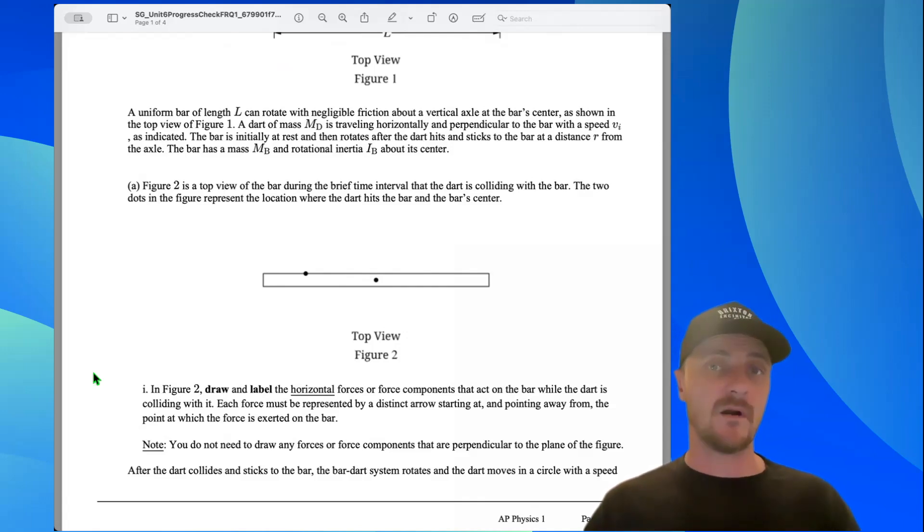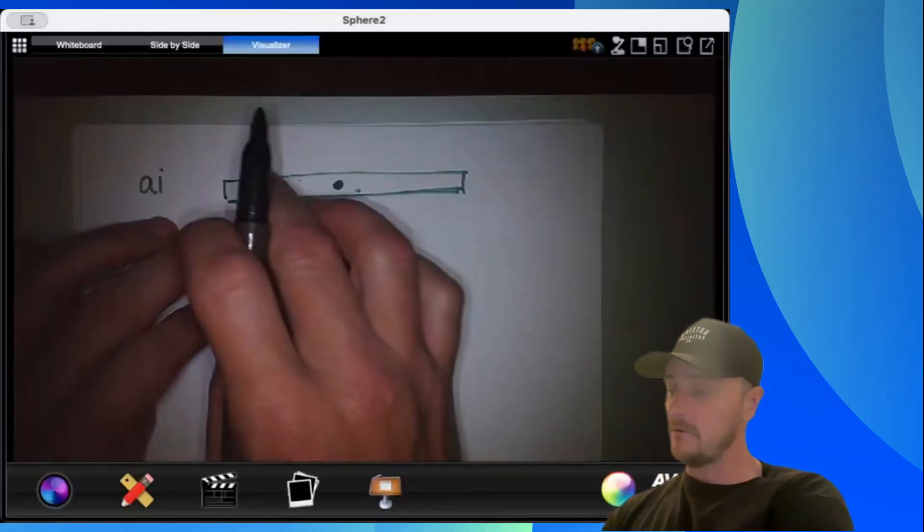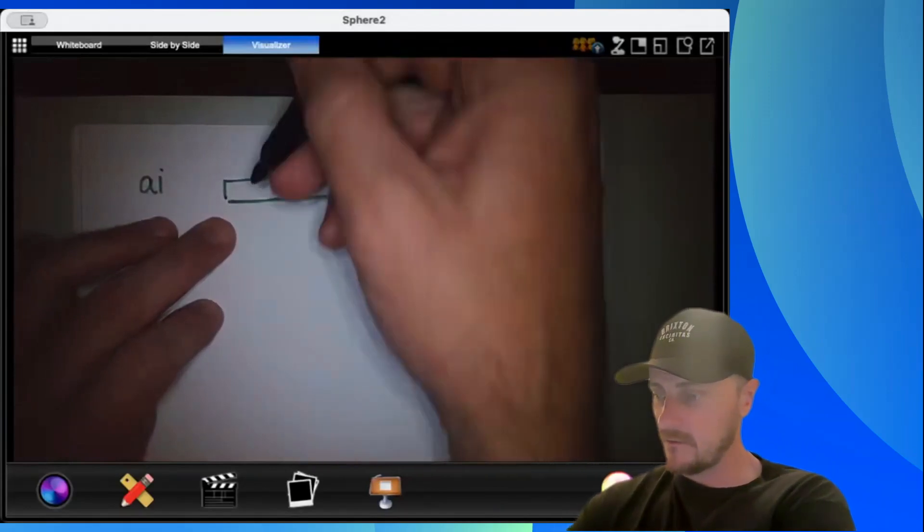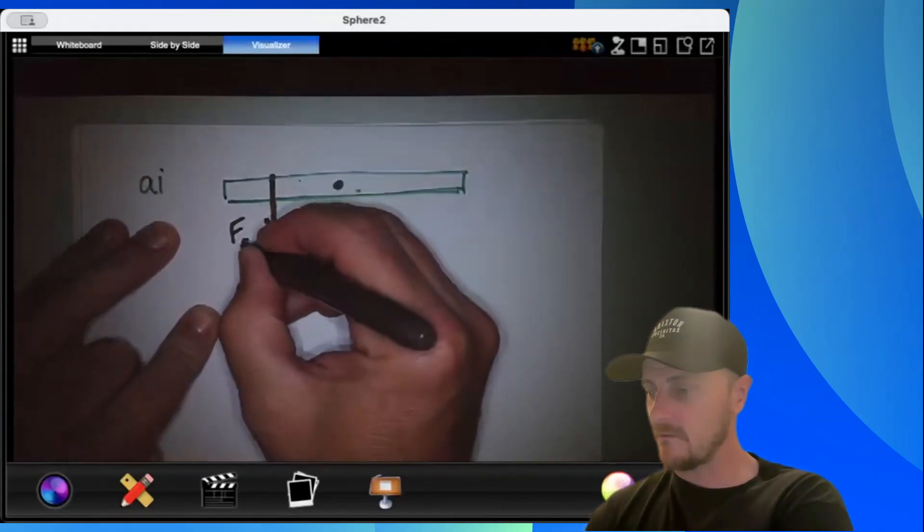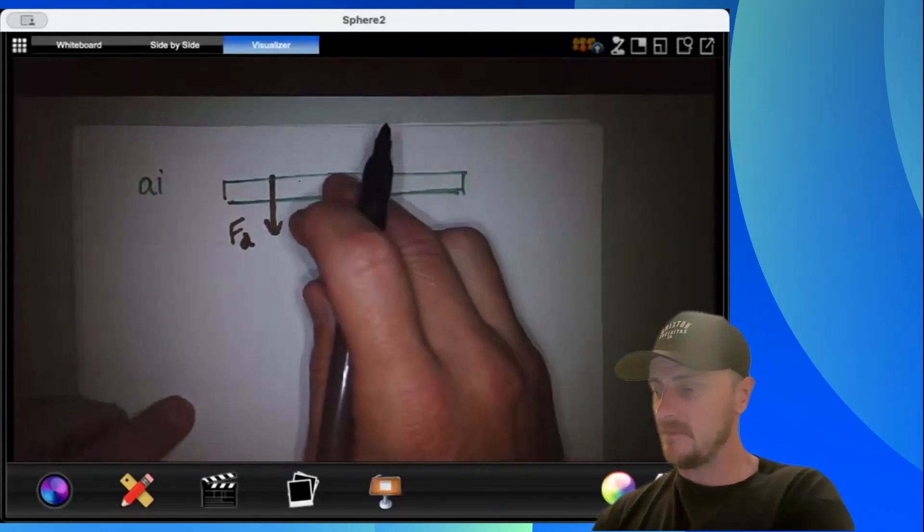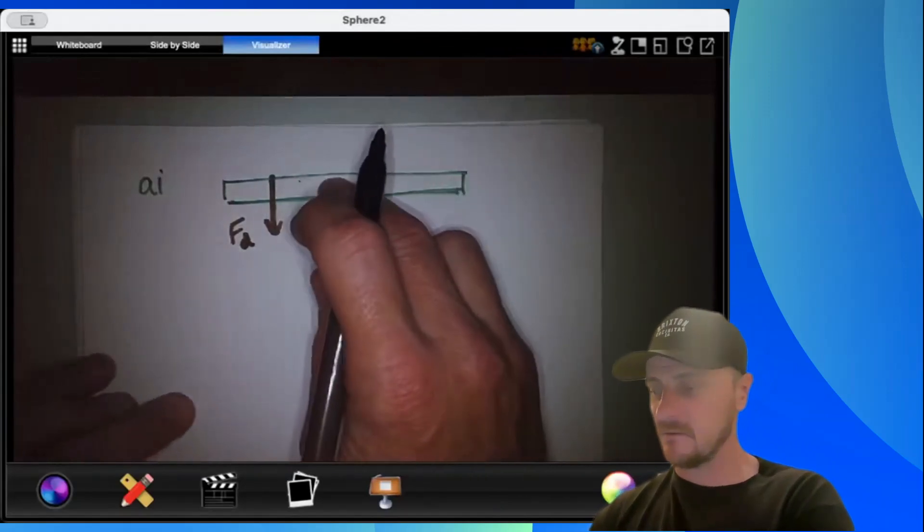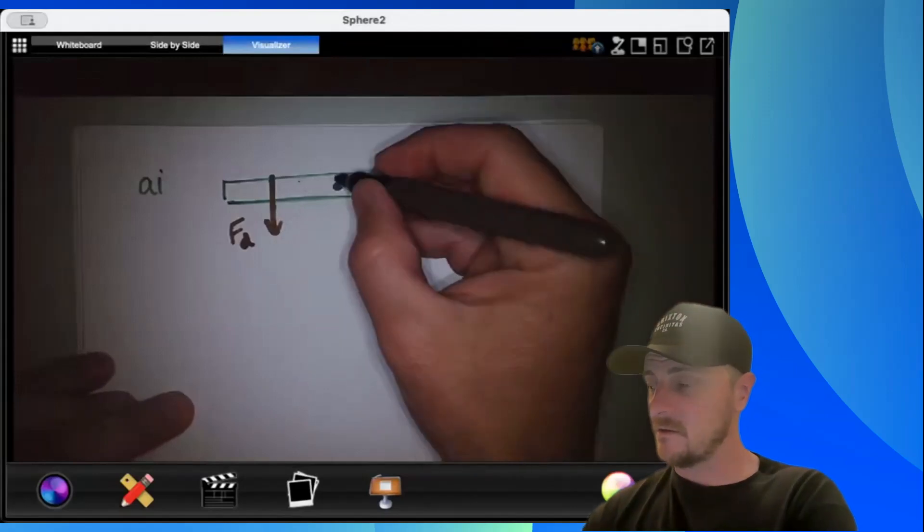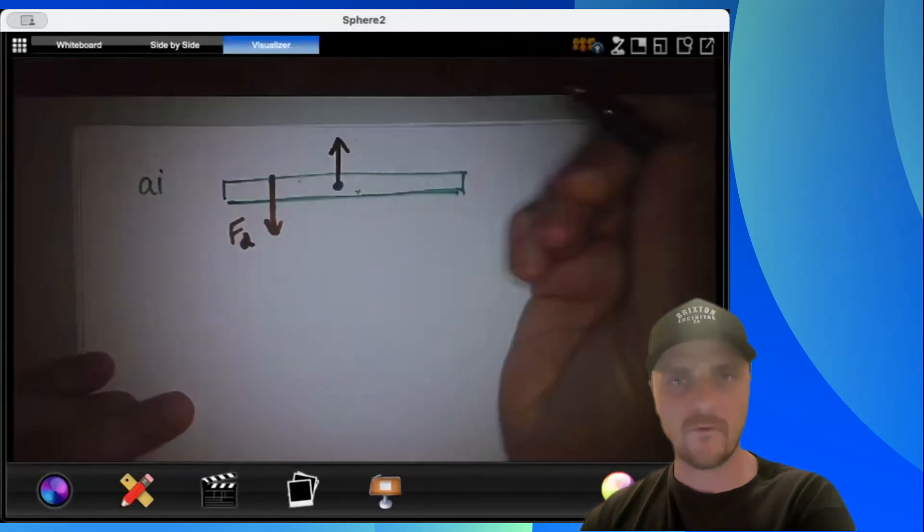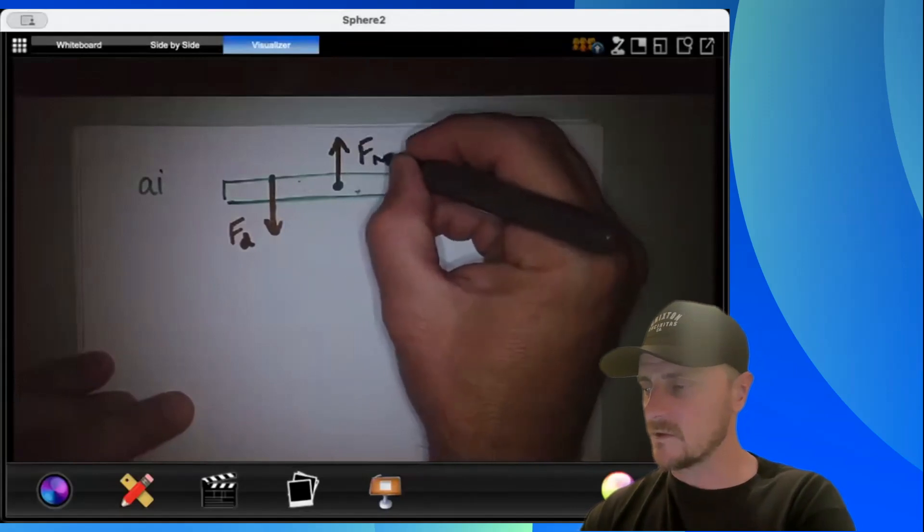Here's our bar with our two locations that we care about. The dart is coming in and it's going to hit this location. We'll call that force of the dart. Also, since the bar is going to rotate, it is being supported by this axle, otherwise it wouldn't rotate. So the axle actually provides a support force that you could call normal force if you wanted to, or the force of the axle. Either one is fine.